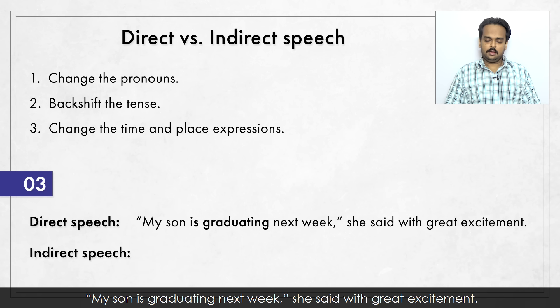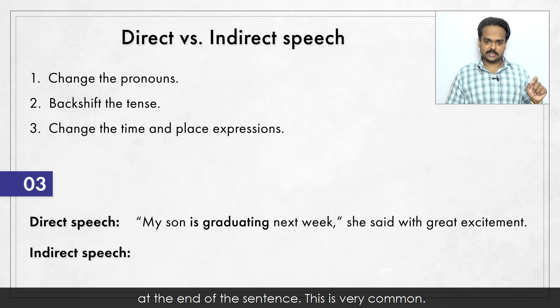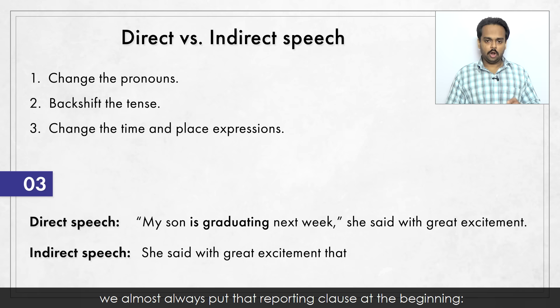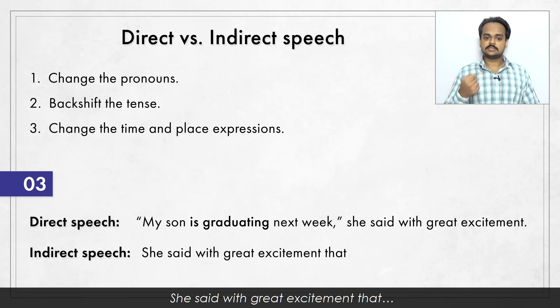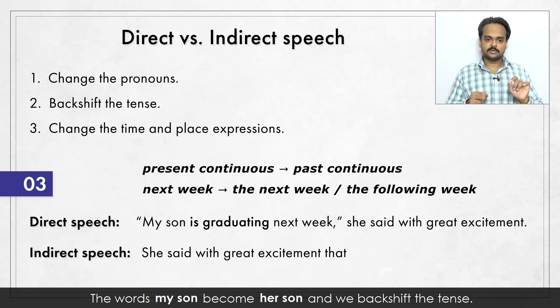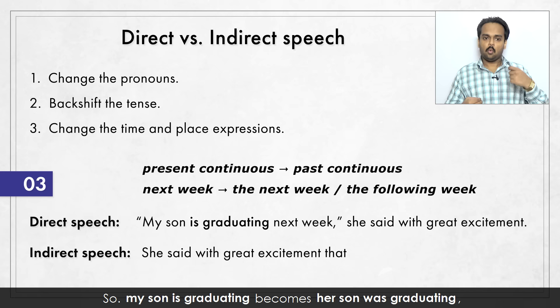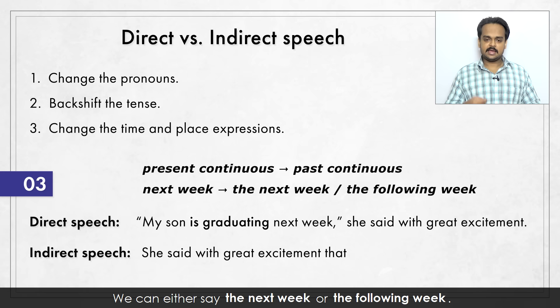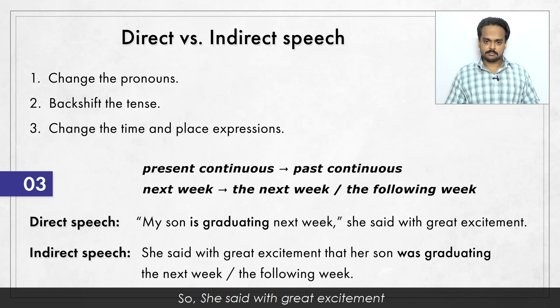Next sentence: "My son is graduating next week," she said with great excitement. We see the reporting clause – "she said with great excitement" – at the end of the sentence. This is very common. When we change a sentence to indirect speech, we almost always put that reporting clause at the beginning. The words "my son" become "her son" and we backshift the tense. So "my son is graduating" becomes "her son was graduating" and "next week" is a time expression – we can say "the next week" or "the following week". So: she said with great excitement that her son was graduating the next week or the following week.